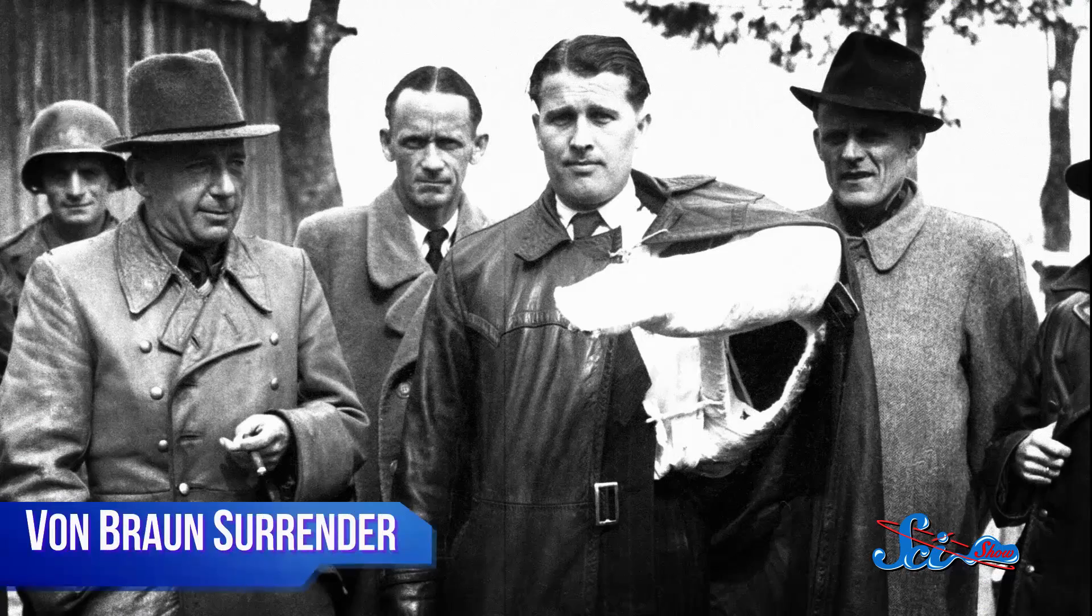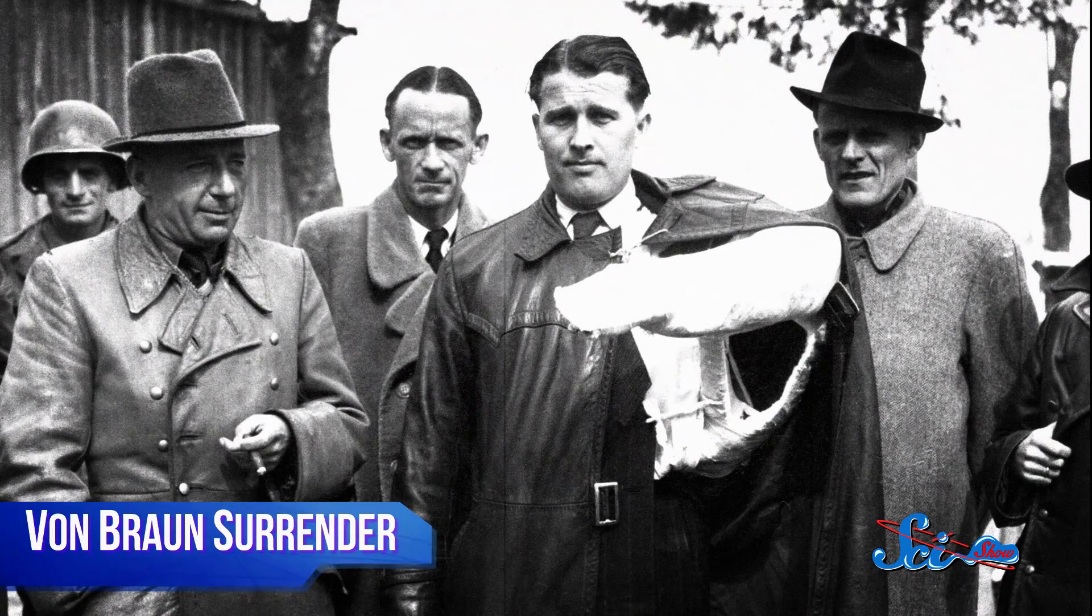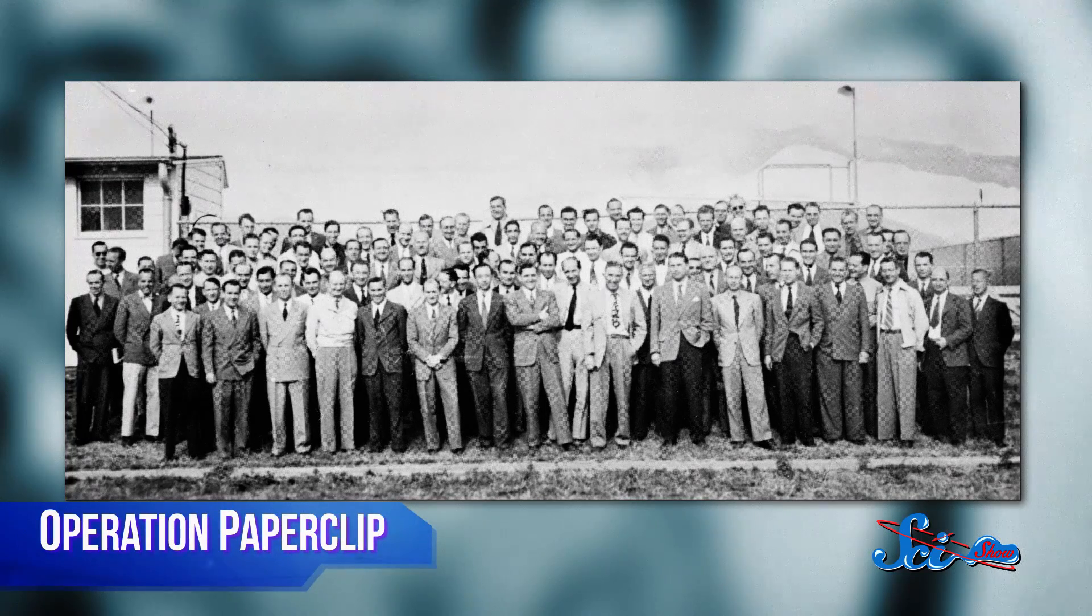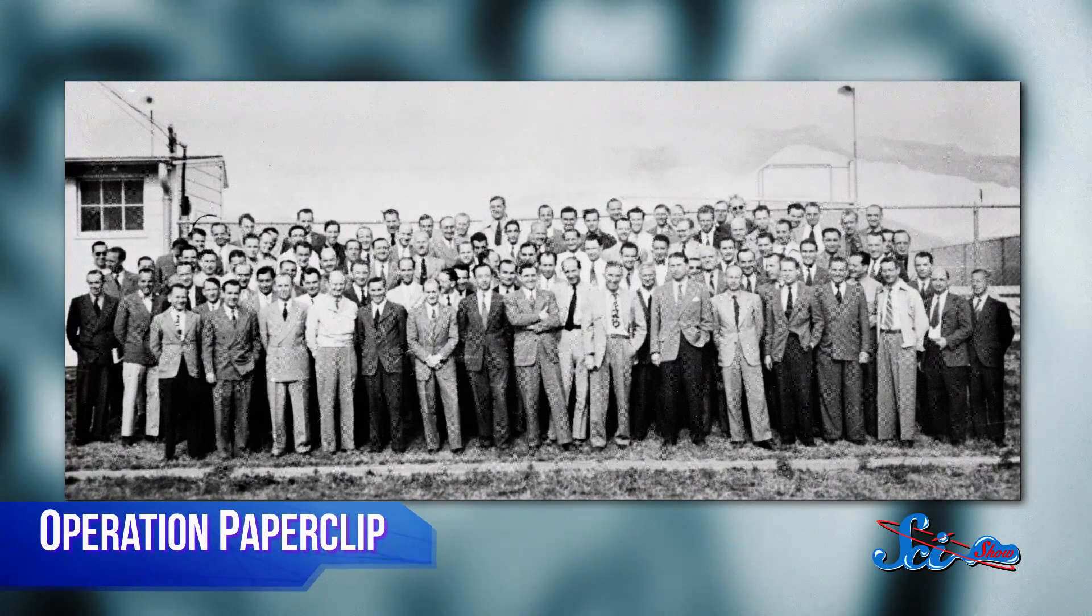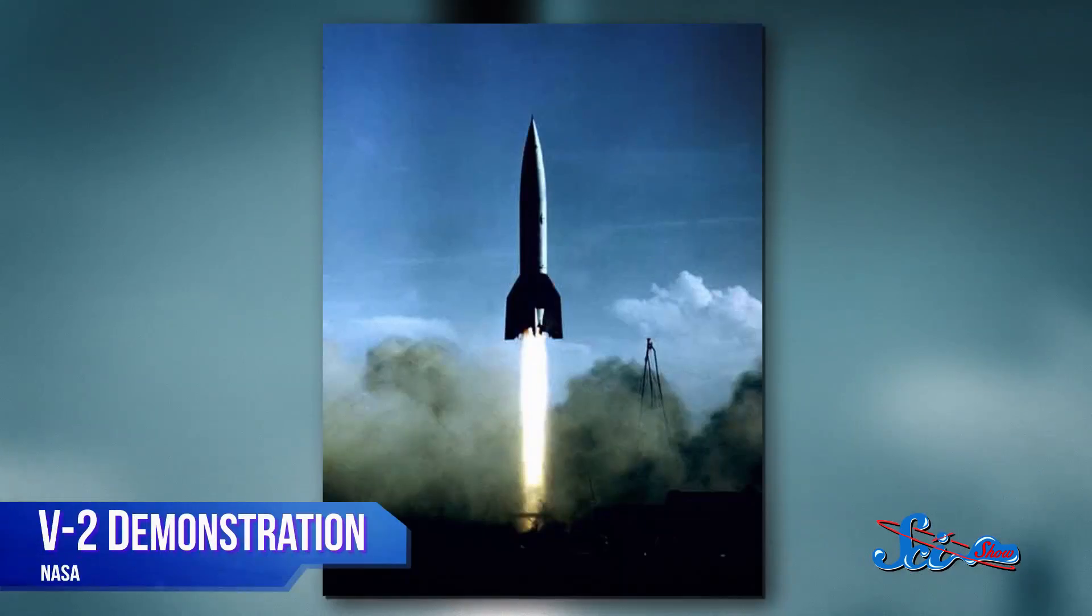But instead, he hid his documents in an abandoned mine and recovered them shortly before he and his team surrendered to the U.S. Army. As part of a carefully orchestrated mission known as Operation Paperclip, von Braun and his team were sent to the U.S., where he demonstrated his weapon to the U.S. Army in New Mexico.